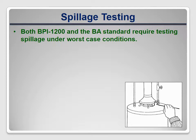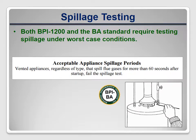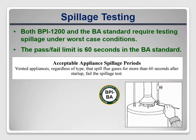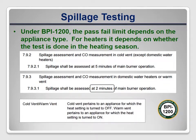Both BPI 1200 and the BA Standard require spillage testing of all vented appliances under worst-case conditions. The BA Standard sets a time limit of 60 seconds for all appliances — if spillage continues beyond that, the appliance fails. BPI 1200 increases the time limit: for water heaters it's two minutes. For heaters with a cold vent (not operating because it's not the heating season), the limit is five minutes. For heaters with a warm vent (currently operating), the limit is two minutes, same as water heaters.